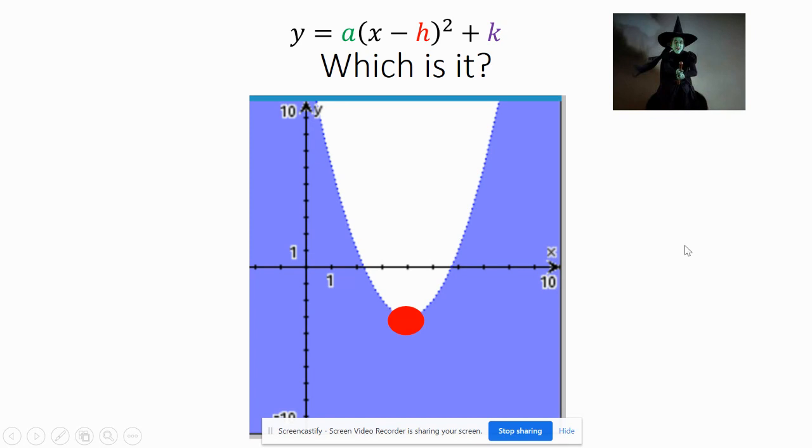So I know that my vertex is at just like one, two, three, four. Just like it's down one, two, I would say three. So it's at four negative three.